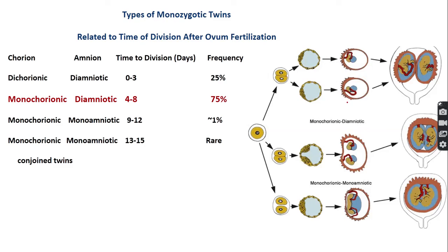In dizygotic twin pregnancy, two separate ova are fertilized by two separate sperm, so two zygotes are formed. Two separate blastocysts form two chorionic sacs, two placentas, two amnions, and two yolk sacs.